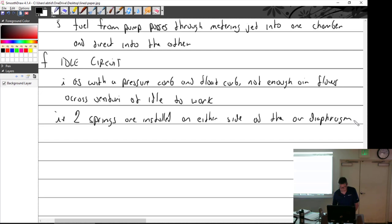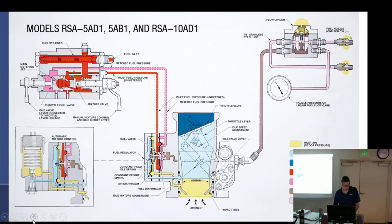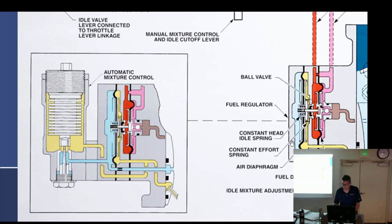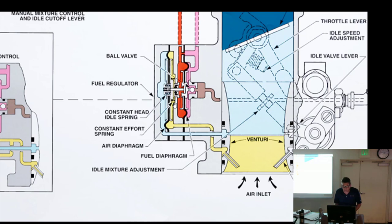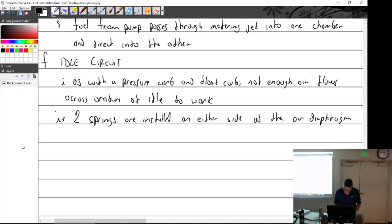Looking at the diagram — there's a constant effort spring and a constant head idle spring. You can call it the idle spring if you want. The constant head idle spring is located in the venturi air chamber.